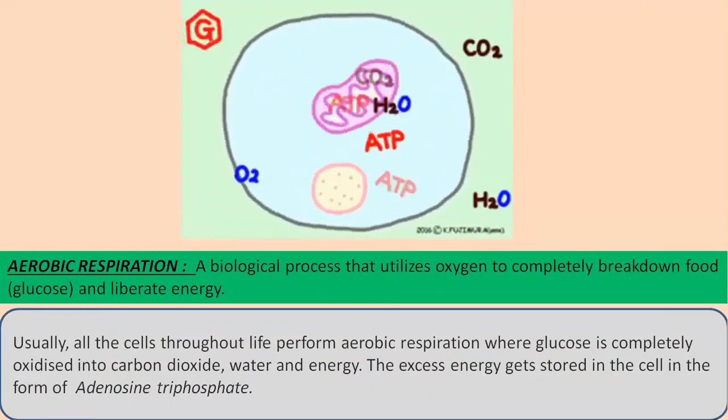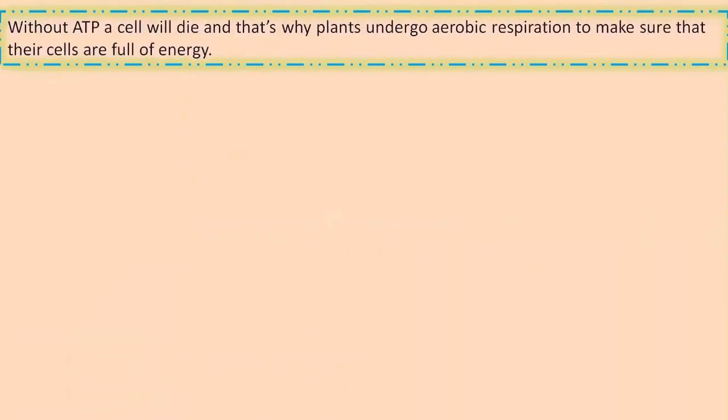ATP is also known as the energy currency for a cell. The purpose of ATP is to carry energy in a cell whenever required. Without ATP a cell will die, and that's why plants undergo aerobic respiration to make sure that their cells are full of energy.